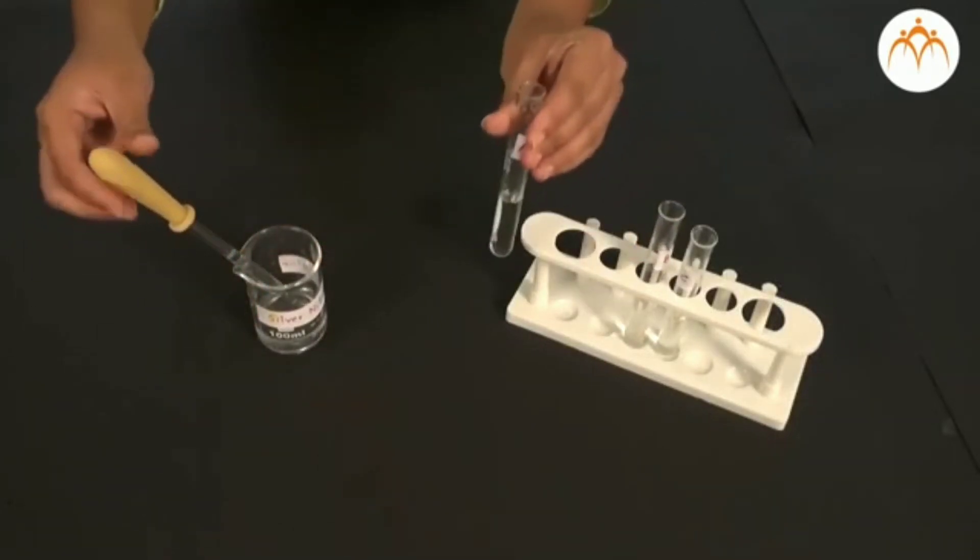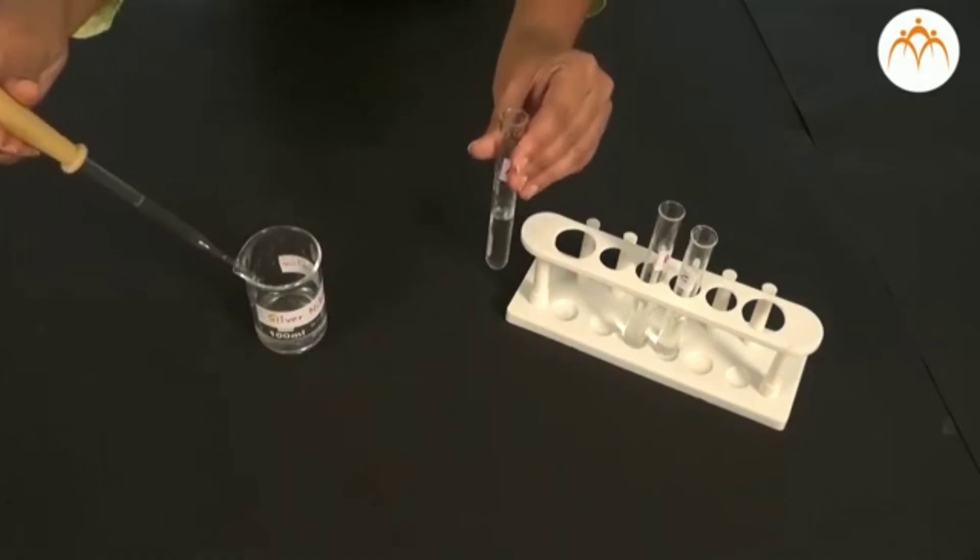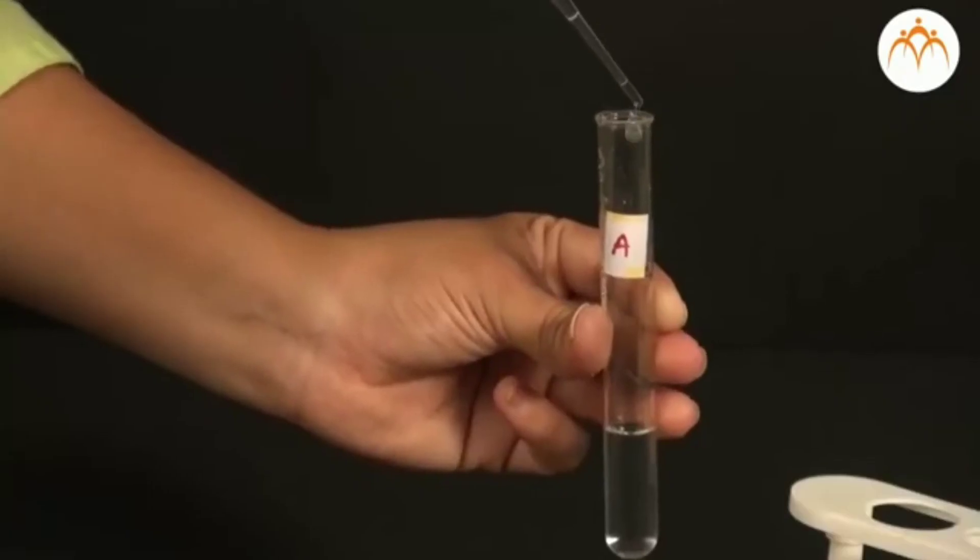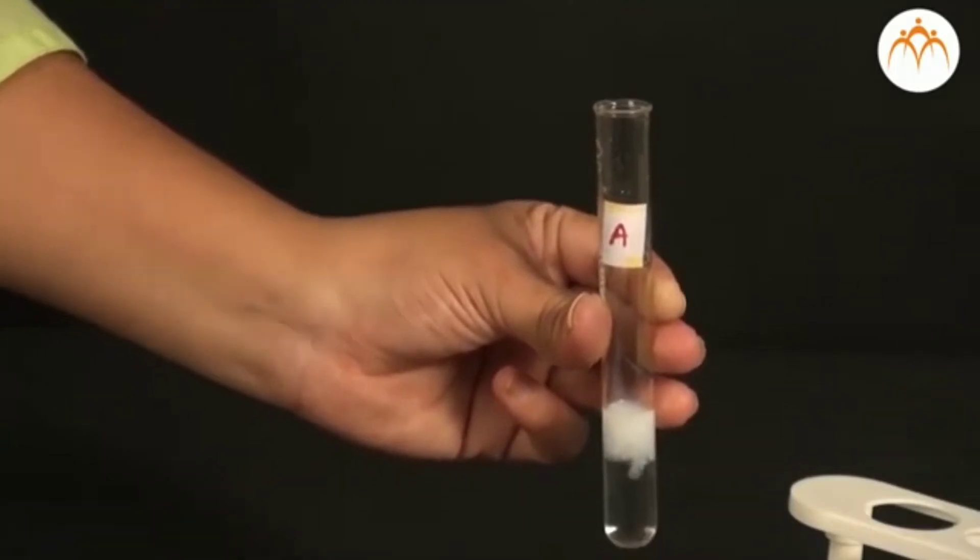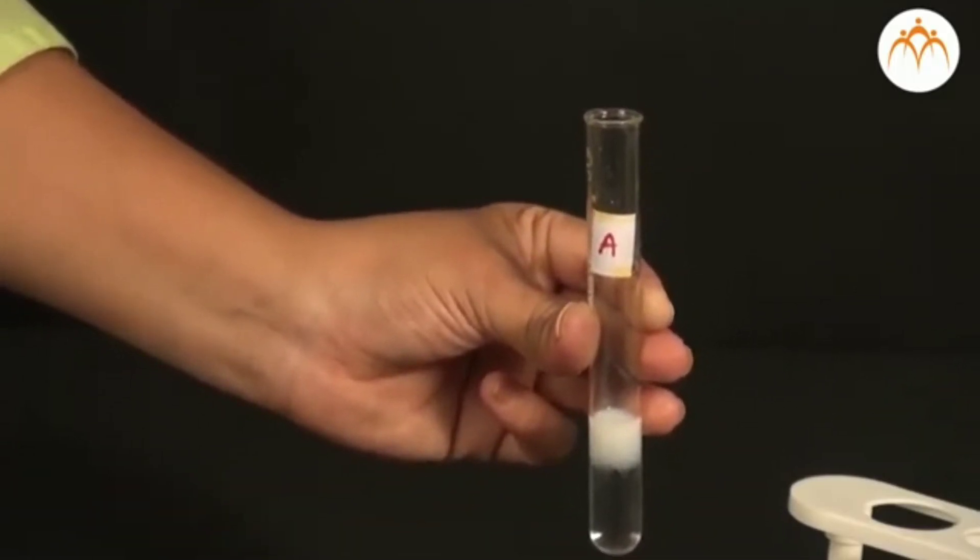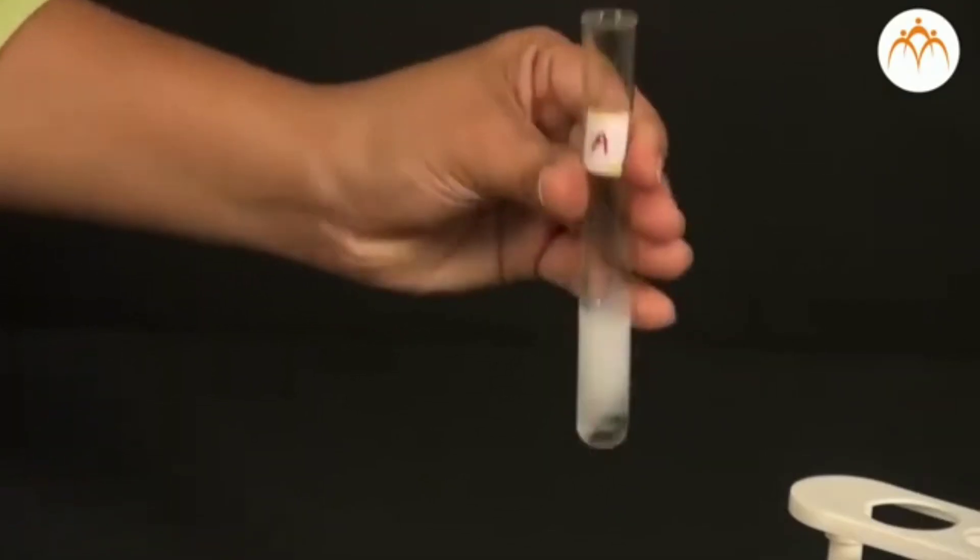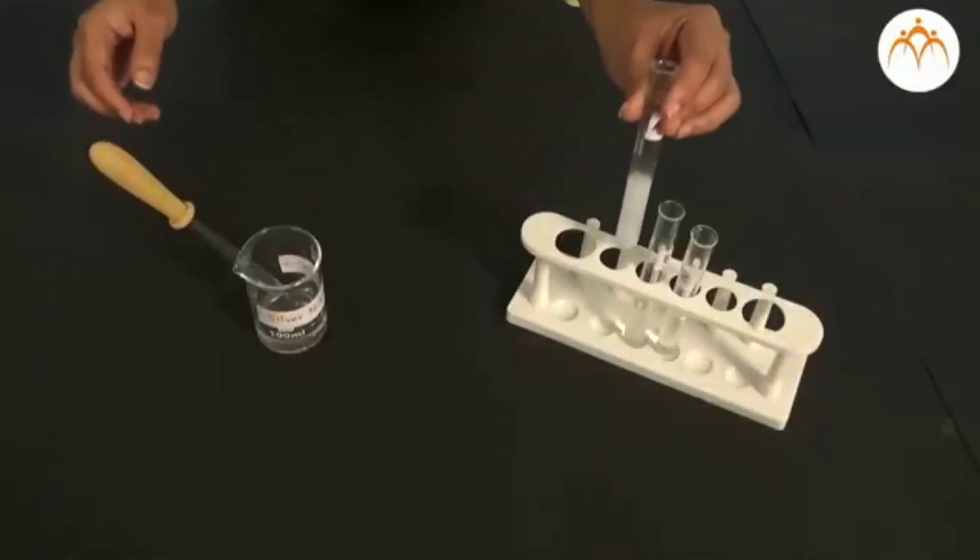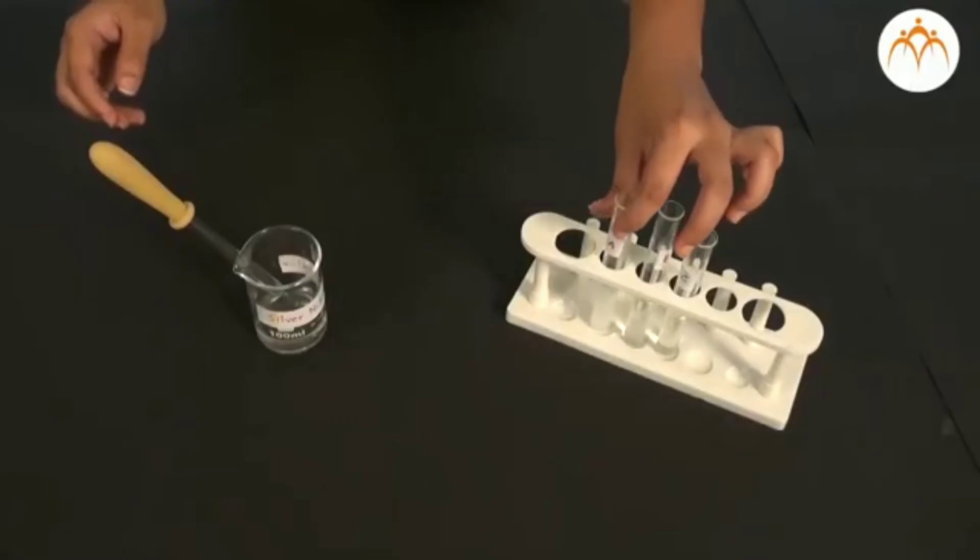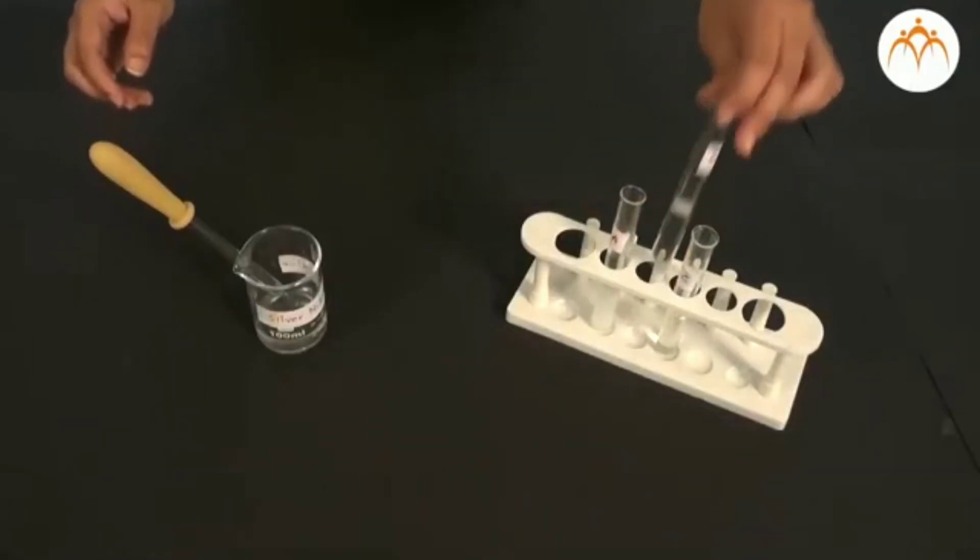Note down the observations in the table. As soon as you add silver nitrate, we find that chemical reaction starts and some product is developed. This product is not a liquid but it is solid. Such solid product that comes out of the solution is known as precipitate and the process is called precipitation.